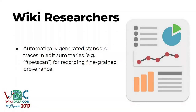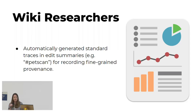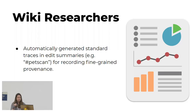We wiki researchers also sometimes lack information in the edit summaries. When doing work to understand the different behavior of editors with tools, bots, or anonymous users, we were really lacking a standard way of tracing that tools were being used. There are some tools that are already doing that, like Petscan and many others, but maybe we should discuss more in the community about how to record this for fine-grained provenance.